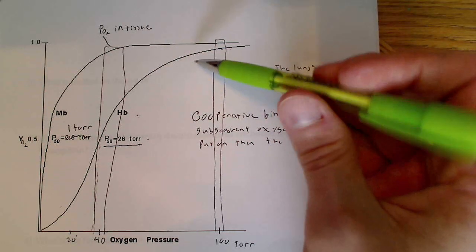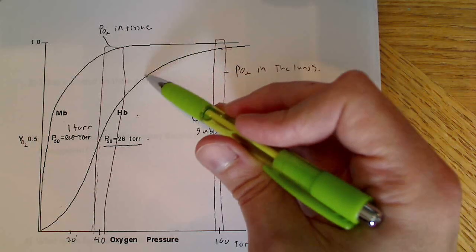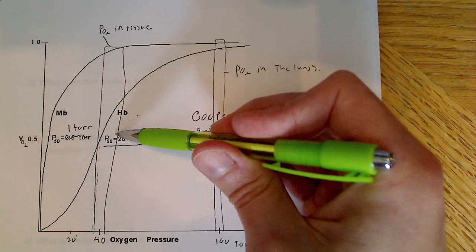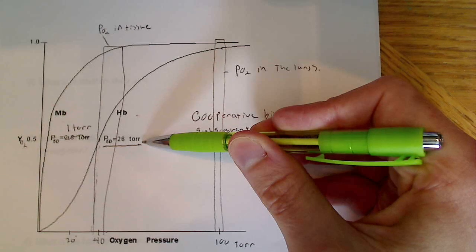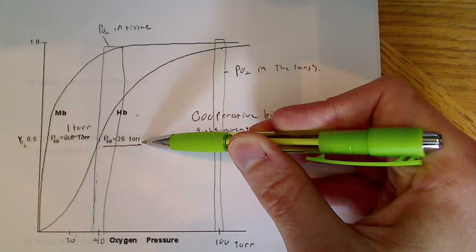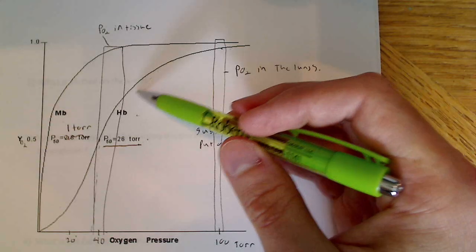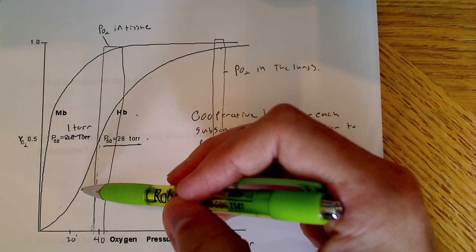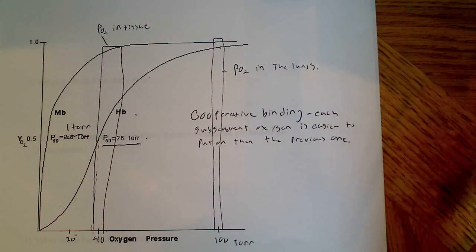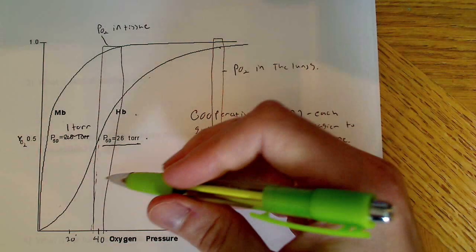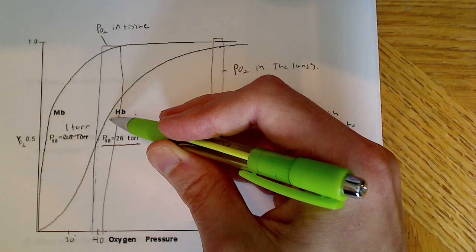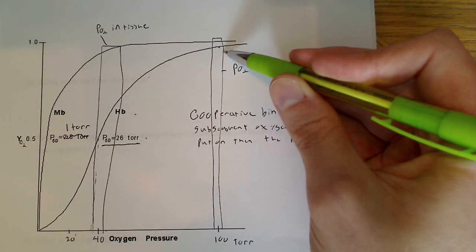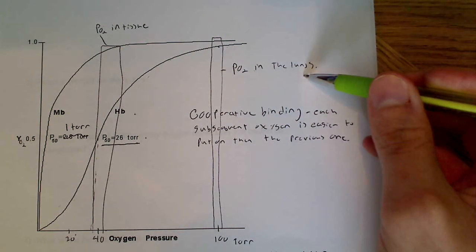You're going to be losing oxygens as you move down the curve until you get to the p50 point at 26 torr, which corresponds to 50% of the available sites having oxygen bound. As the pressure decreases, you're going to be releasing oxygen easier and easier. So at tissue pressure, it's going to be much easier to release oxygen where it's needed, and hemoglobin binds oxygen much tighter in the lungs where you're taking oxygen in.